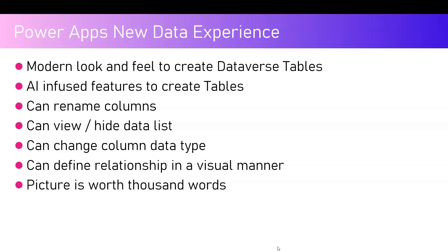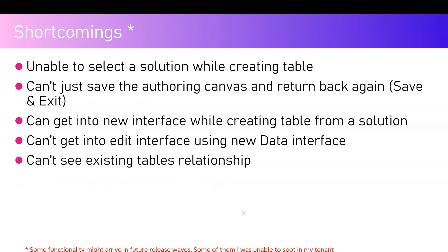AI-related features were available earlier, but the key change introduced after Build 2024 was mostly related to showing the relationships between two different tables or entities. The functionality currently available includes: renaming columns, viewing or hiding the data list on the fly, changing the column data type, and defining relationships in a visual manner. As we all know, a picture is worth a thousand words, so this is very useful if you have a complex data model within your Dataverse environment.